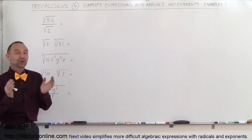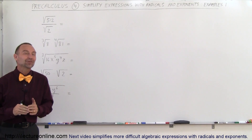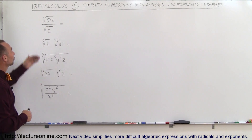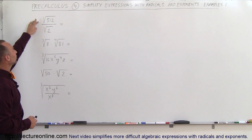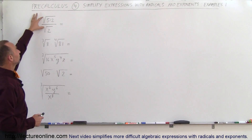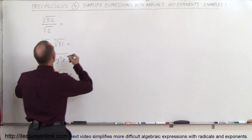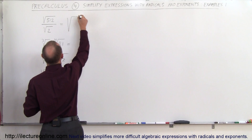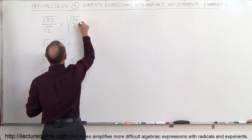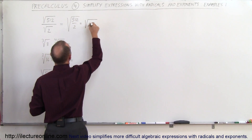Welcome to Electrical Online. Let's start with some examples of how to simplify expressions with radicals. In our first example, we have a radical in the numerator and a radical in the denominator. It's the same root, which means we can combine them. We can write it like this: this is equal to the square root of 512 divided by 2, which is equal to the square root of 256.